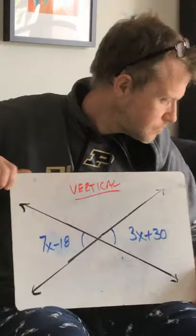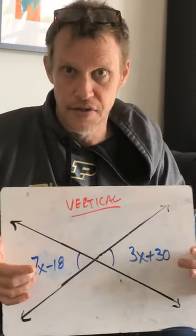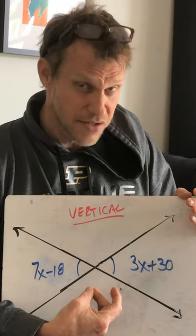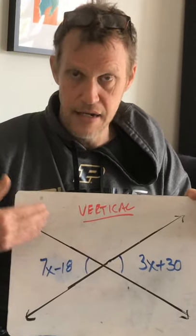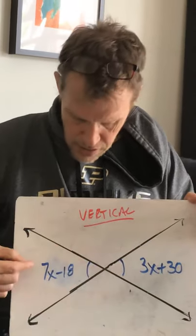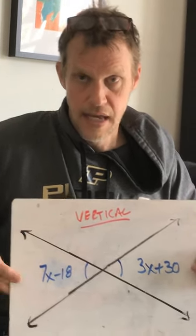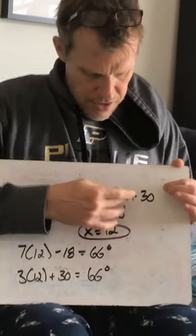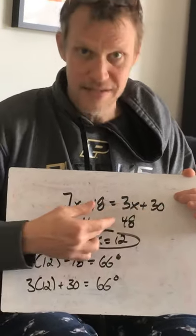That's supplementary equals 180. The last one is equation practice with vertical angles — that's what it's called on Khan. What do you know about vertical angles? They're not equal to 90 and not equal to 180 — they are equal to each other. So if they give you vertical angles, you set them equal to each other. Take the algebra route: set them equal, get your x's on one side and your constant term on the other. Here we know 7x minus 18 is equal to 3x plus 30. Subtract 3x from both sides to get 4x, then add 18 to both sides — 4x equals 48.